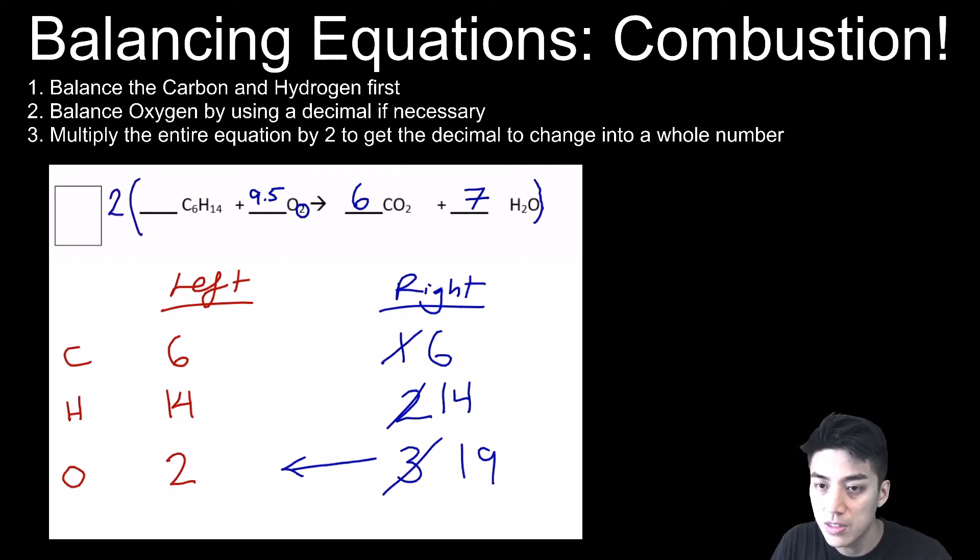We were forced to use a decimal, which is not a problem. Now you just double every coefficient. The coefficient there is two times one, plus two times 9.5, arrow sign, two times six will give you 12, and two times seven will give you 14. Add up all the coefficients: 2, 19, 12, and 14, and we are left with a sum of 47.